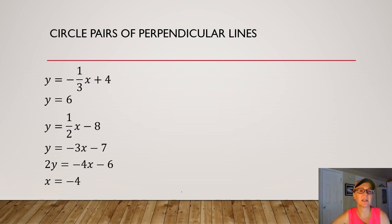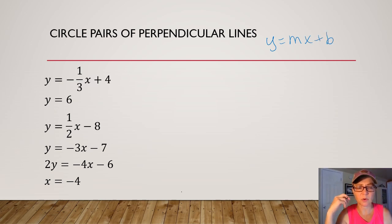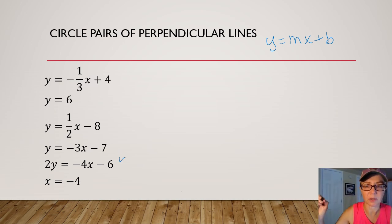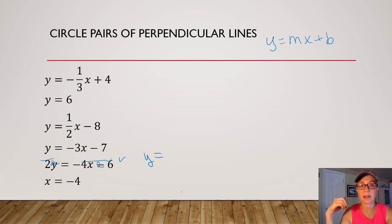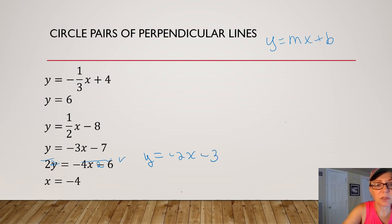We're going to do the same process with perpendicular lines now. Before we start, we're again going to look for that y equals mx plus b structure. The first four equations are ready, but the fifth equation needs work — we divide both sides by two to isolate y. Negative four divided by two is negative two, and negative six divided by two is negative three. So I scribble out the original.